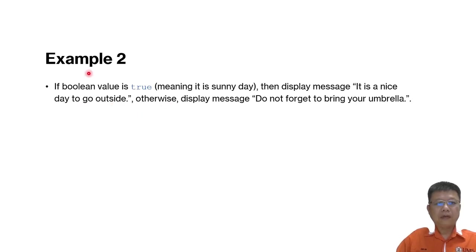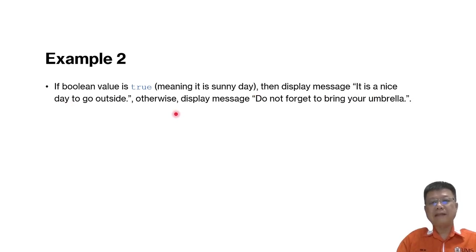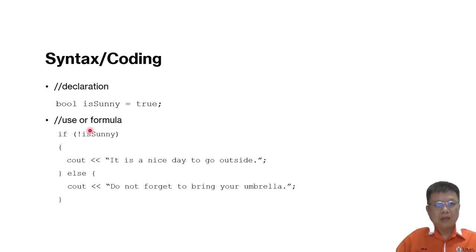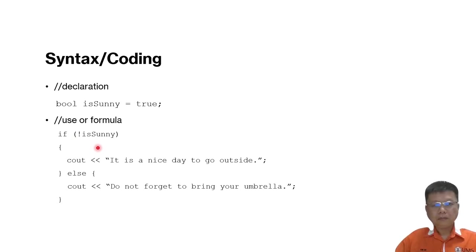Let's try this example. If the boolean value is true — meaning it is sunny — we display 'it is a nice day to go out,' the same example as before. But now we try to include NOT and see whether the result is as expected.